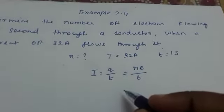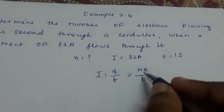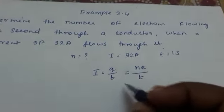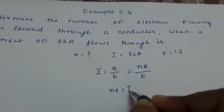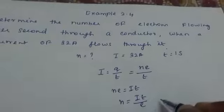So we can write here, I is equal to ne by t. So ne is equal to It. So n is equal to It by e.